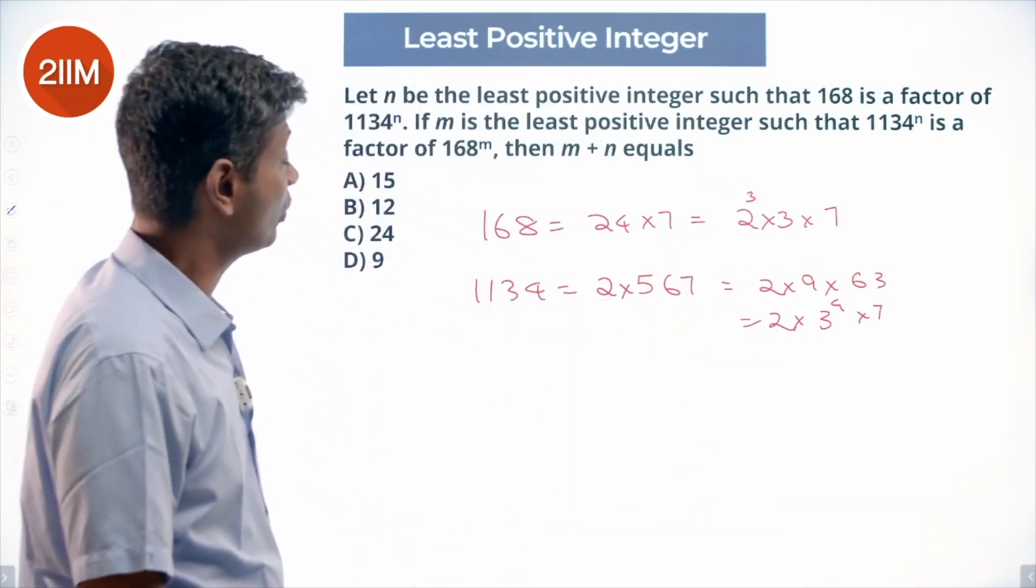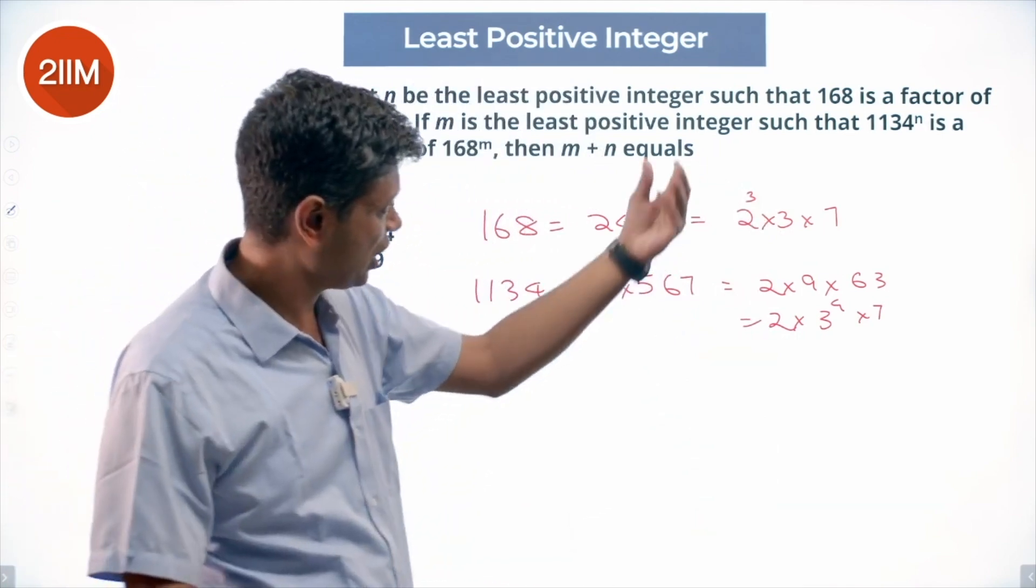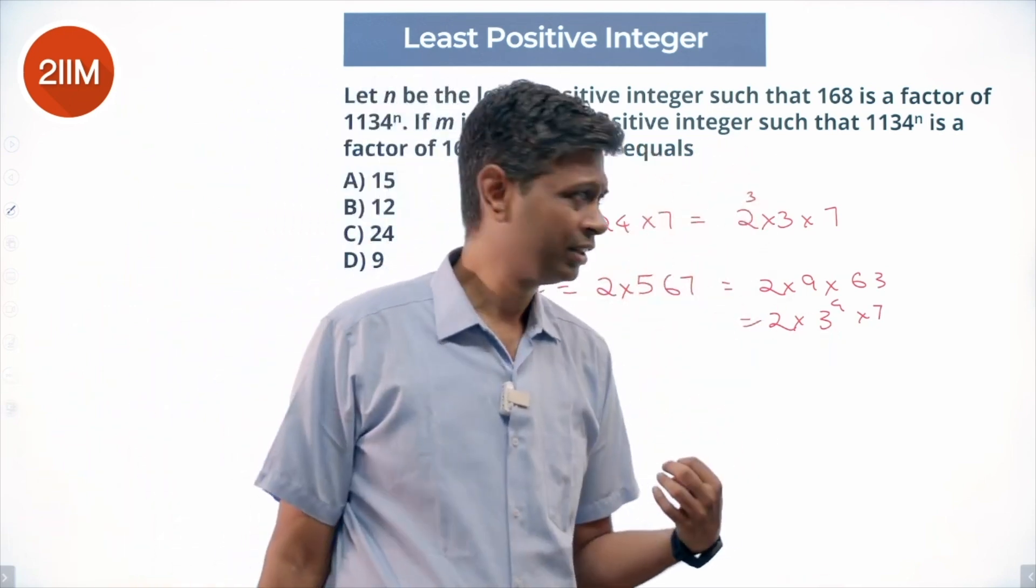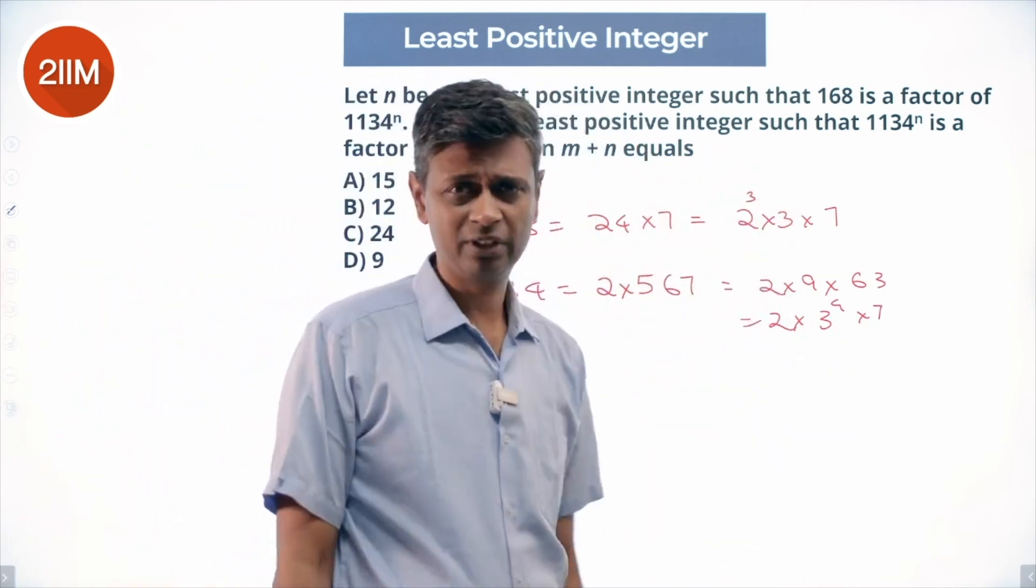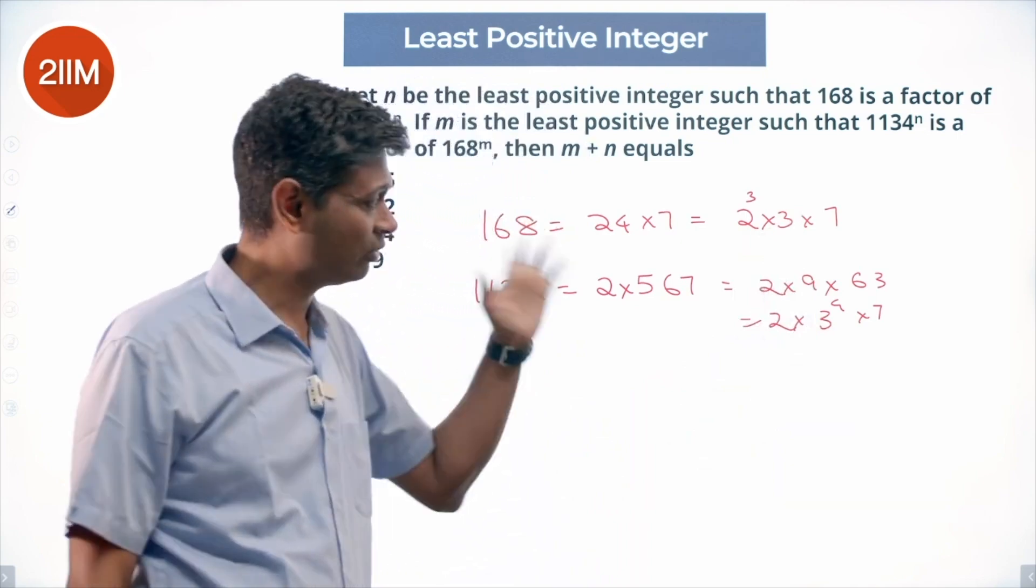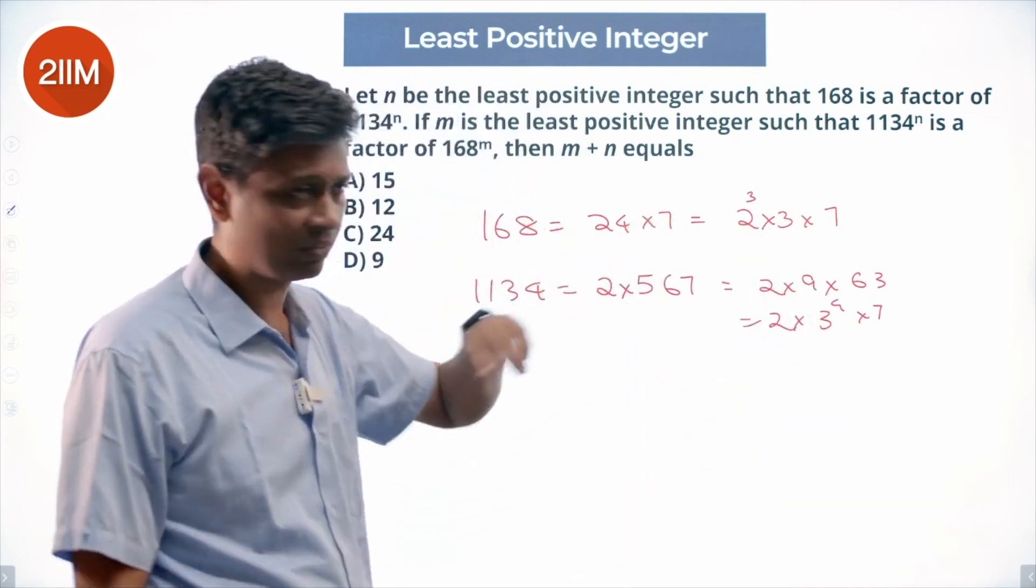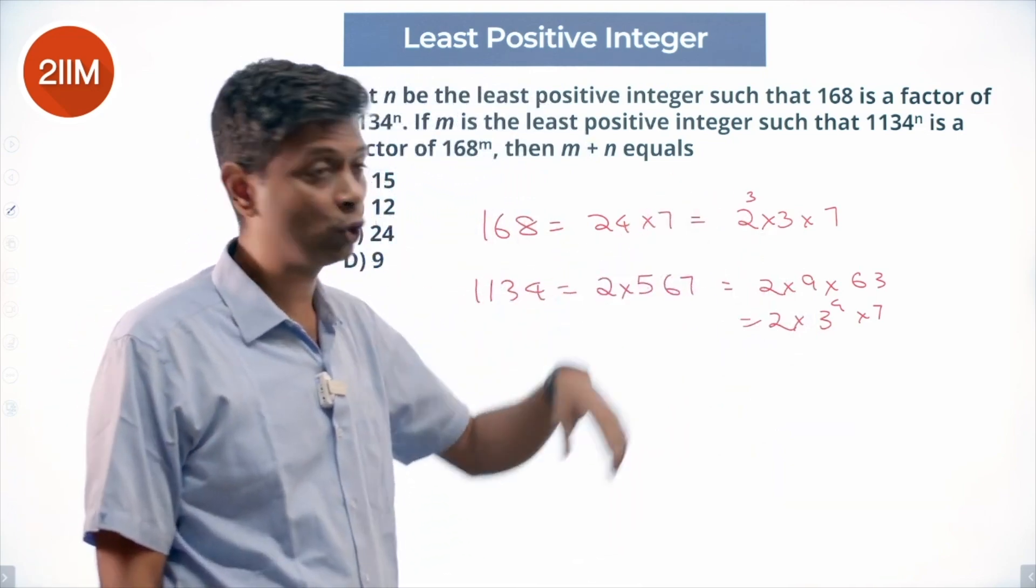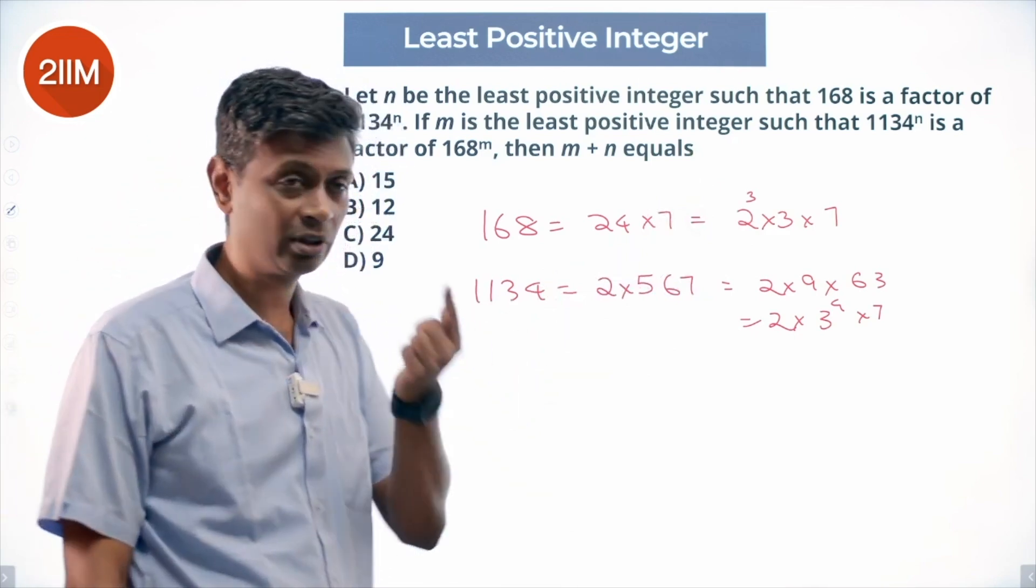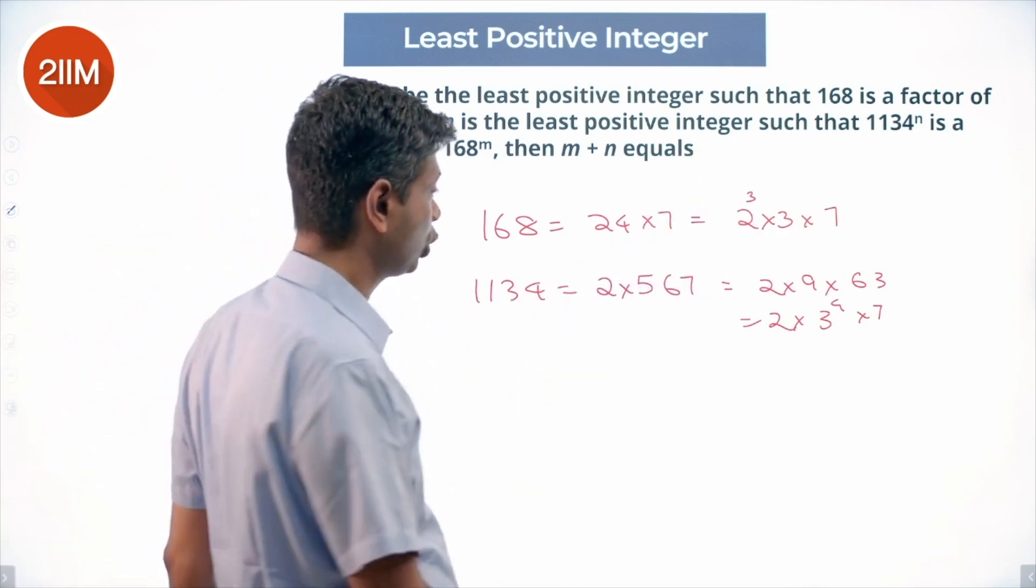Nice. 1134^n, 168 should be a factor of that. 168 should be contained within this. There are lots of 3s, lots of 7s. Even 1134^1 will contain 3s and 7s. 2^3, I need to have three 2s in this number. This number has only one 2, so I have to cube this.